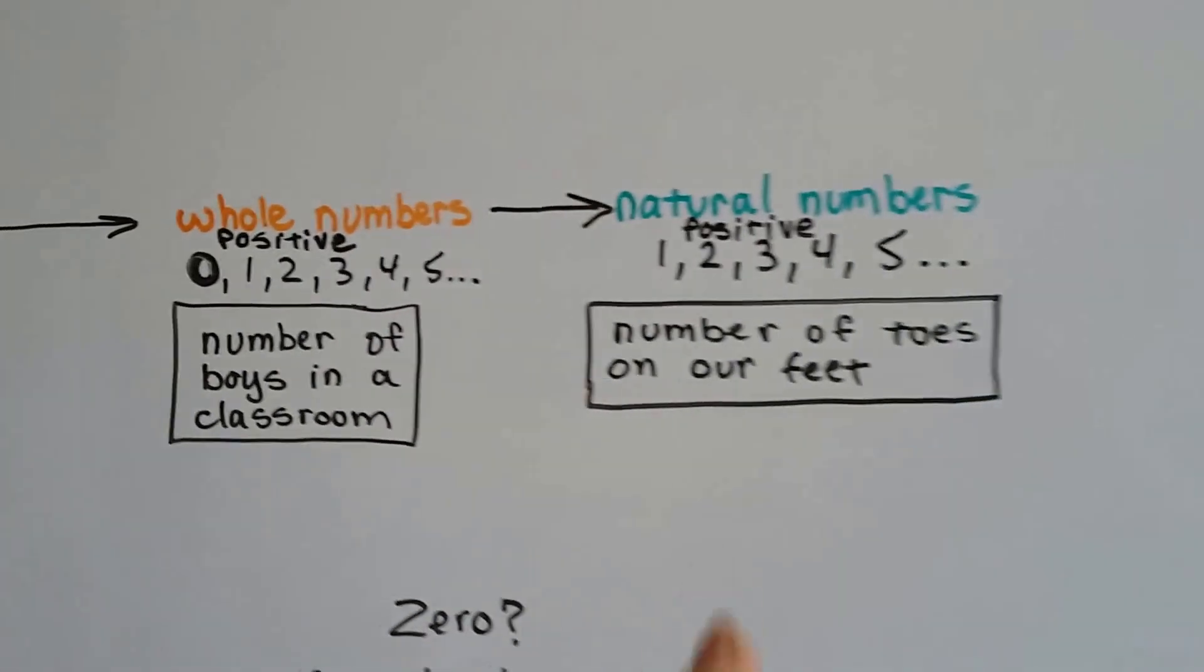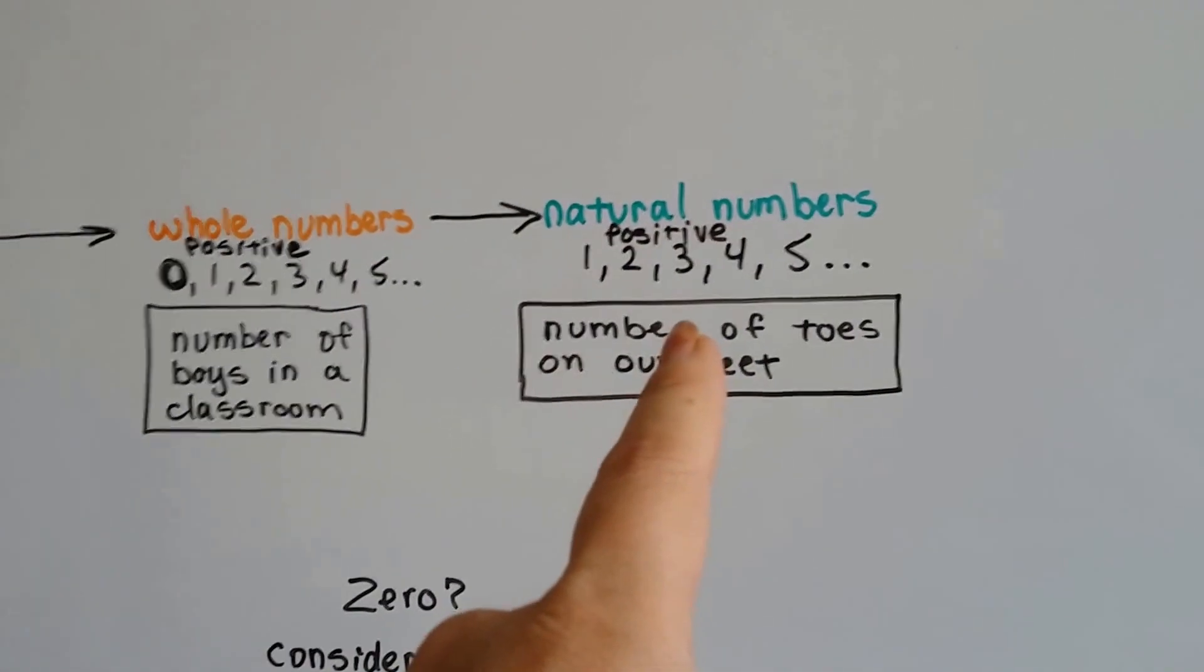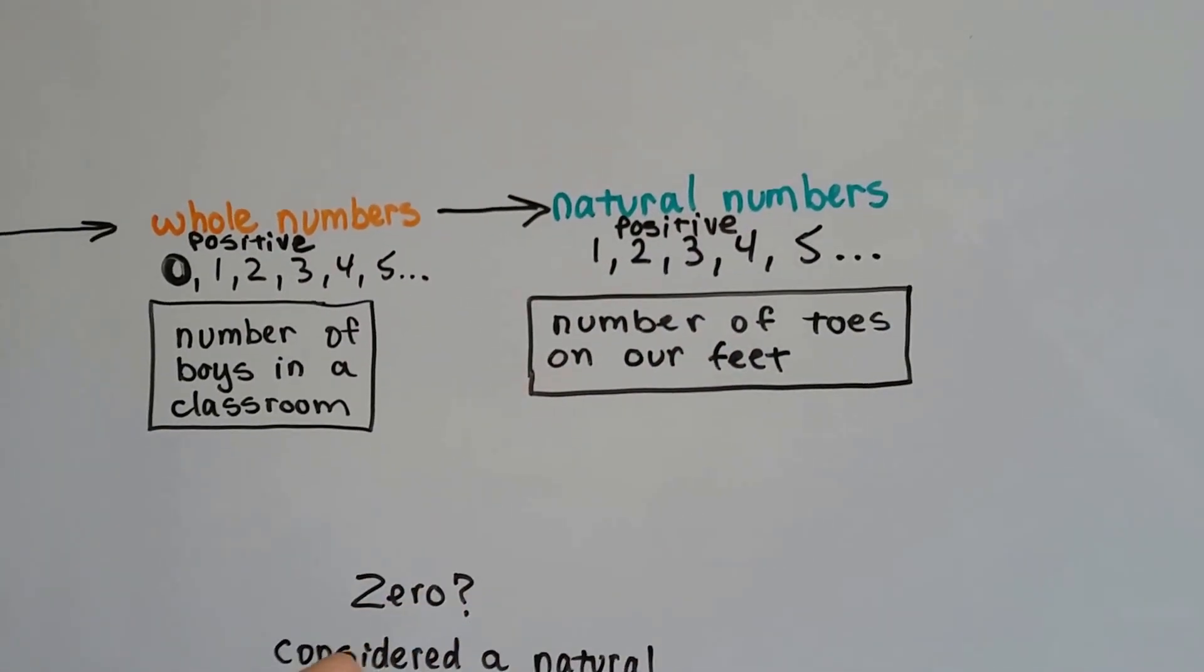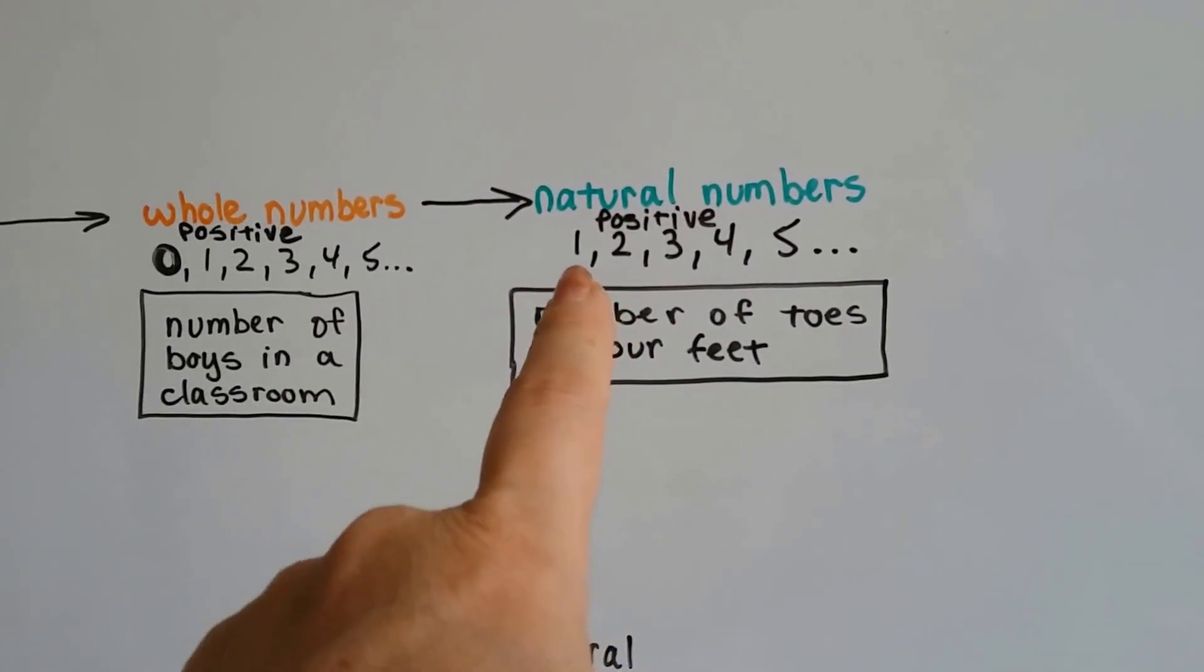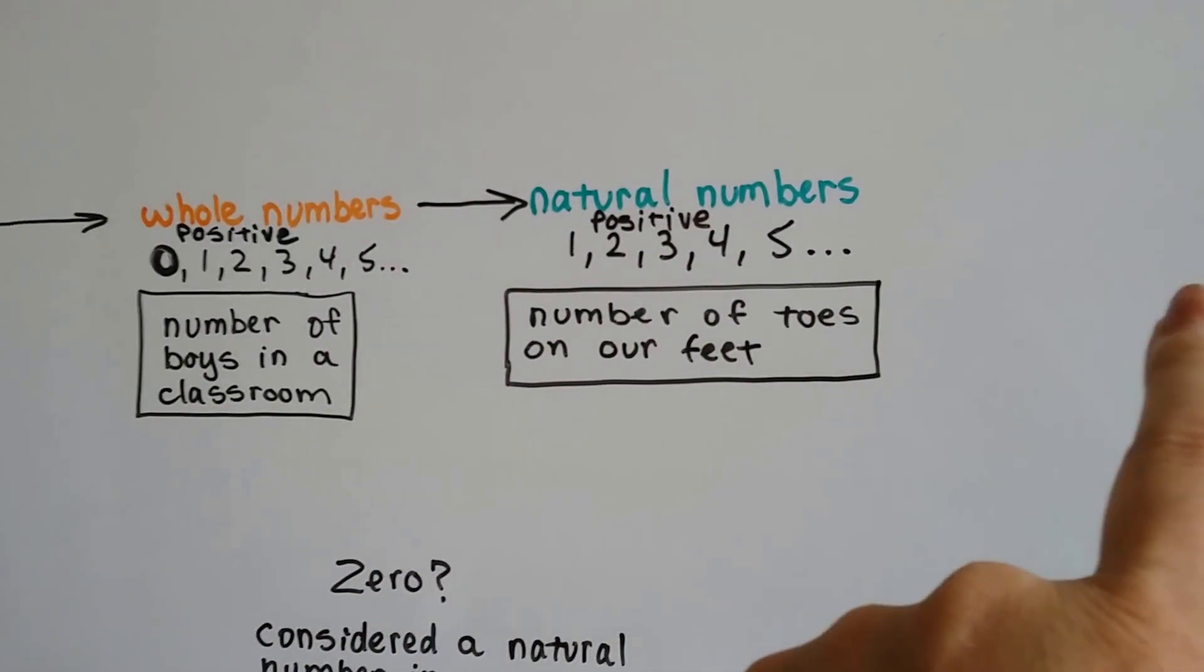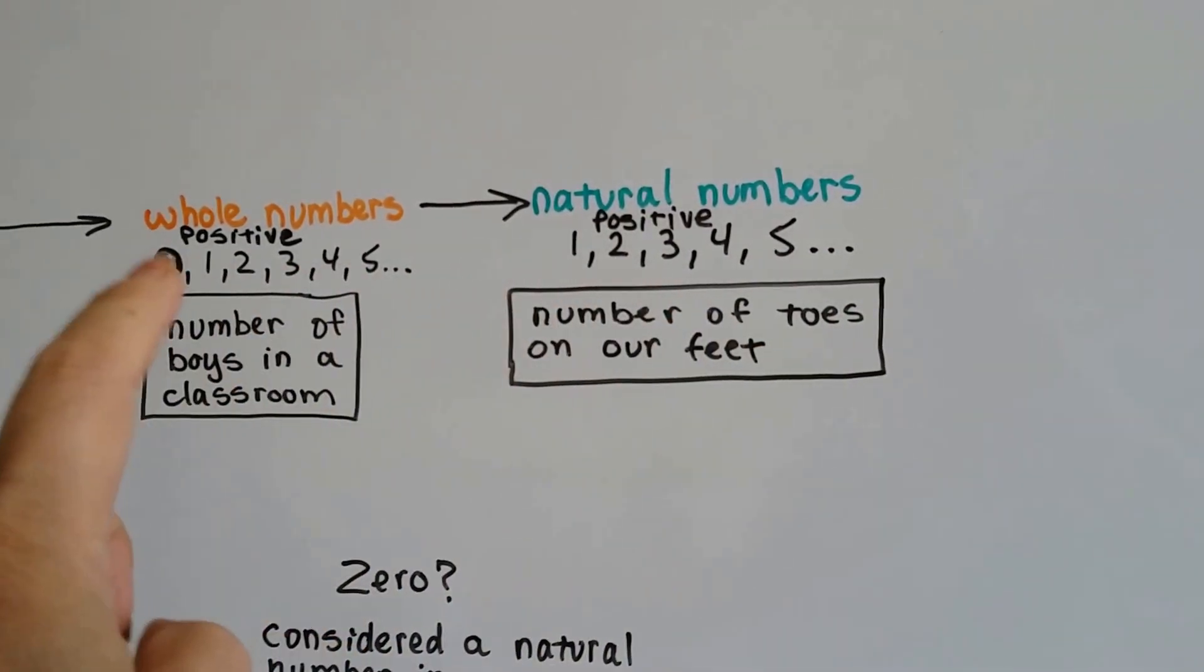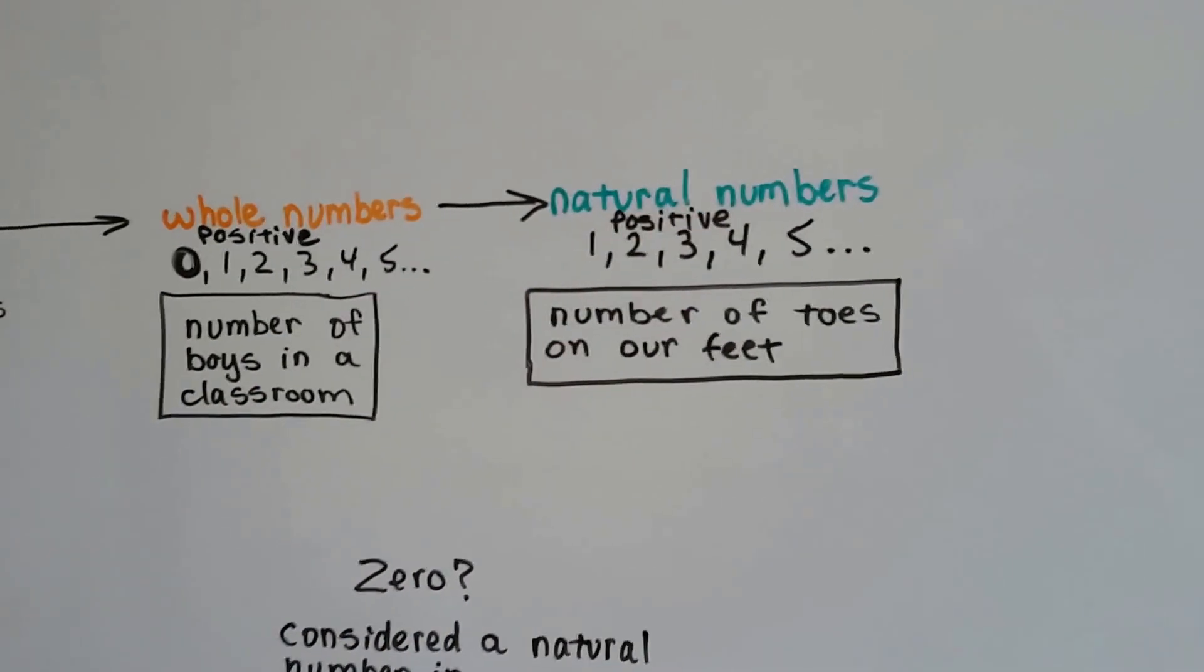Natural numbers, those are all positive also. They would be like the number of toes on our feet or the number of fingers on our hand. And it starts with a one and goes on to infinity. So zero is in the whole numbers and not the natural numbers.